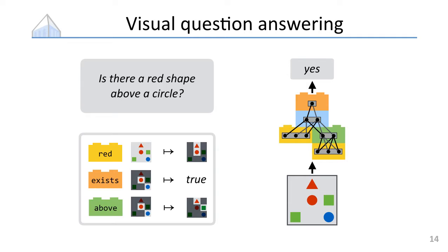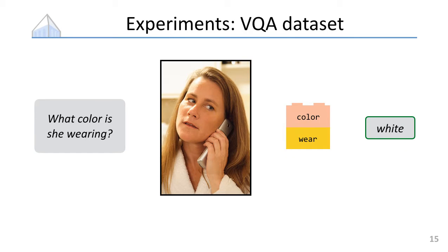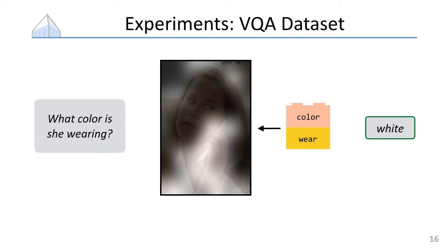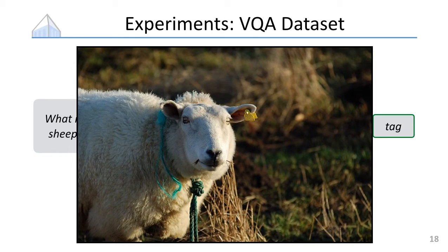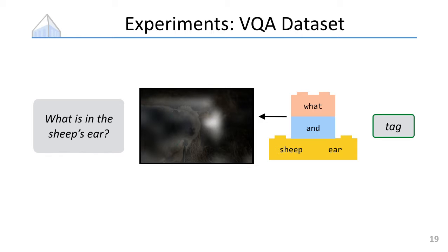Here are some examples. For the question 'what color is she wearing,' we get a simple linguistic analysis and the model correctly predicts white. One thing we can do with models like this is figure out what parts of the image they need to look at to answer the question — it looks at the woman's clothes and a region above her head where it might have seen a hat, and concludes she is wearing white. For a more complex question like 'what is the thing in the sheep's ear,' the model finds the sheep, finds the ear, focuses all attention on the ear, and correctly predicts that the label is a tag.